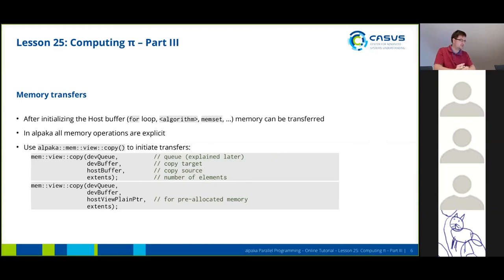After you've initialized the host buffer using a for loop, for example, something from algorithm or a simple memset, you can transfer your memory from the host to the device. In ALPACA, all memory operations are explicit and in order to copy memory from the host to the device, ALPACA comes with a memview copy function.